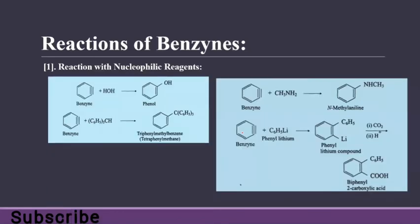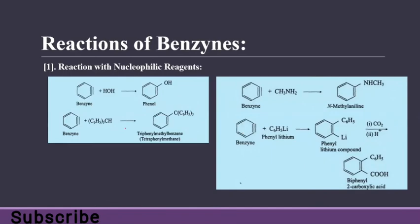Reactions of benzyne: it reacts with nucleophilic reagents. The simplest example is reaction with H2O — hydrogen attaches to one carbon, the OH group attaches to the other carbon, giving phenol. If it reacts with CH3-NH2, then we have N-methylaniline, with one hydrogen molecule attaching to one carbon and CH3-NH attaching to the other. Reaction with liquid ammonia: one hydrogen attaches to one carbon and NH2 attaches to the other, giving aniline.